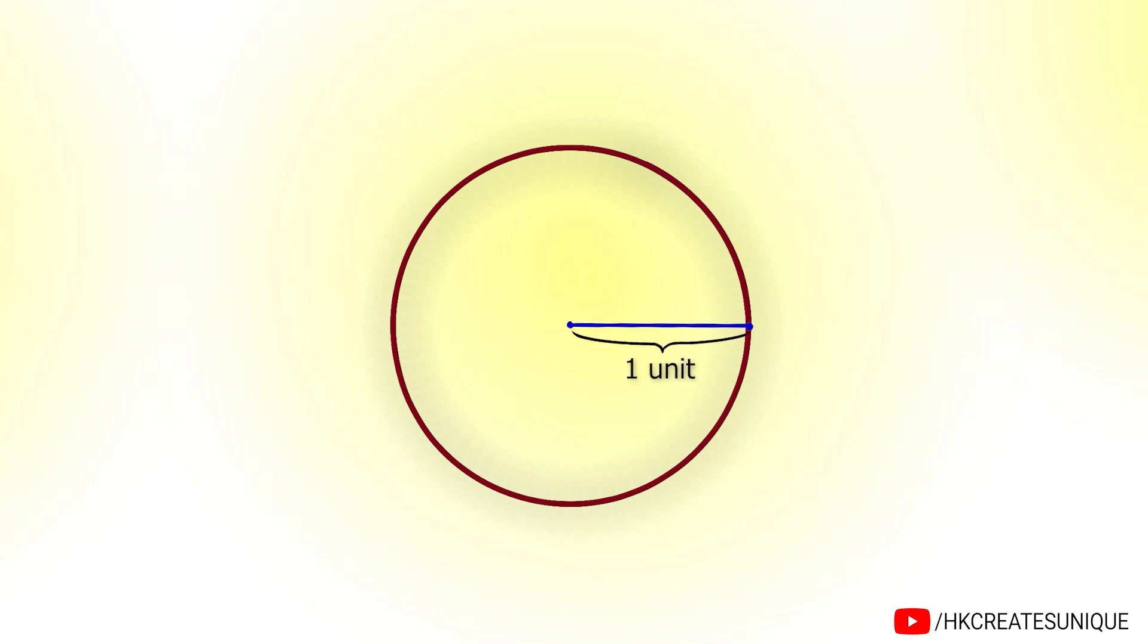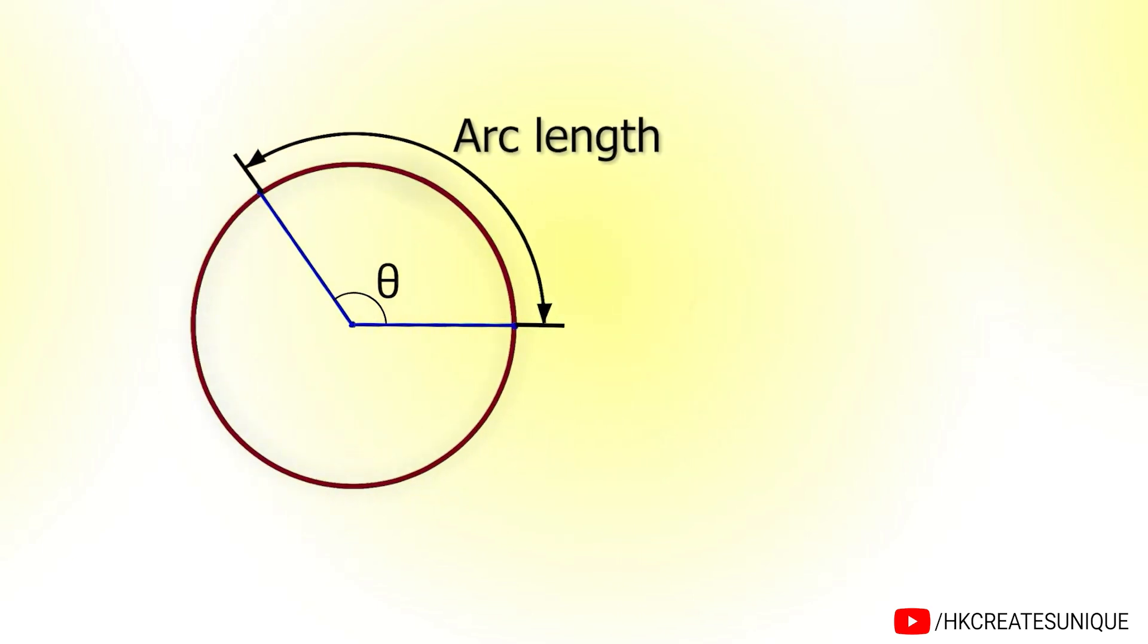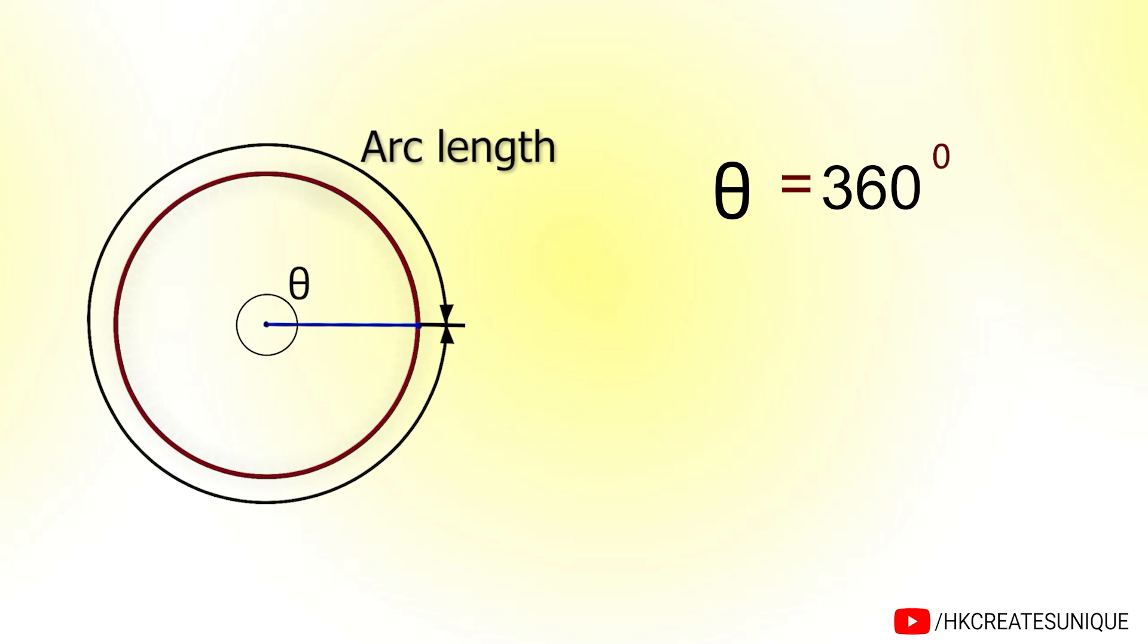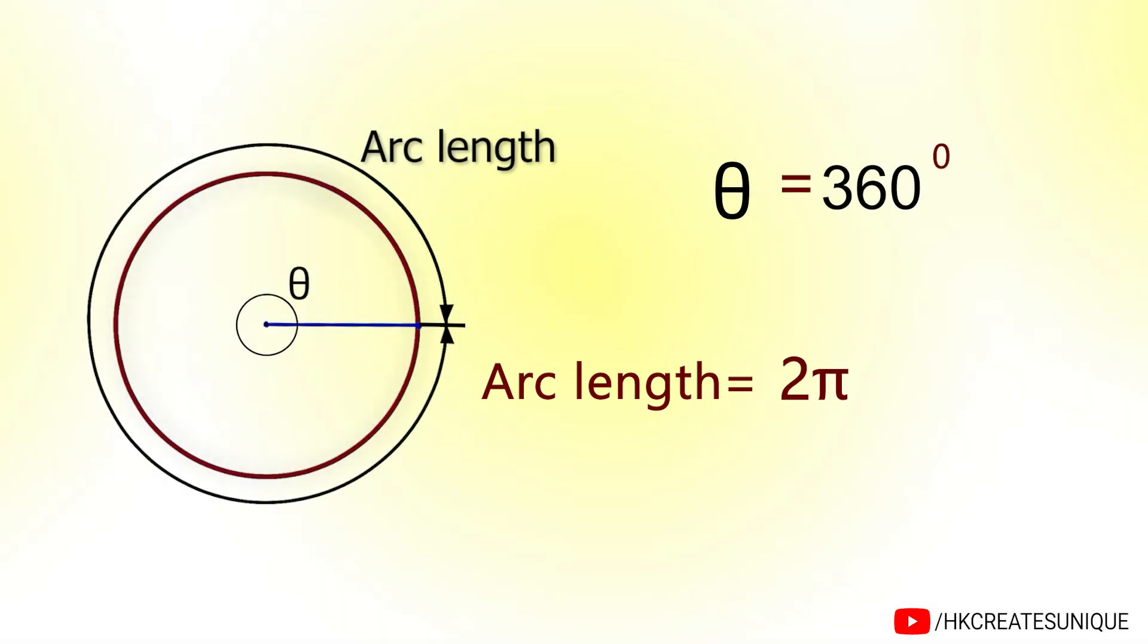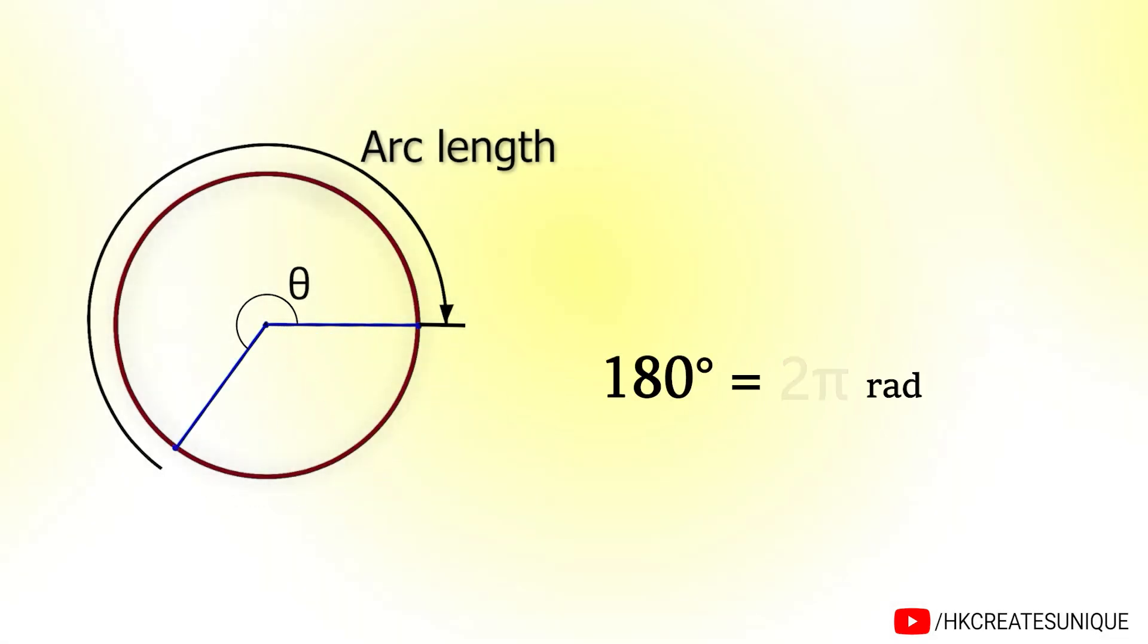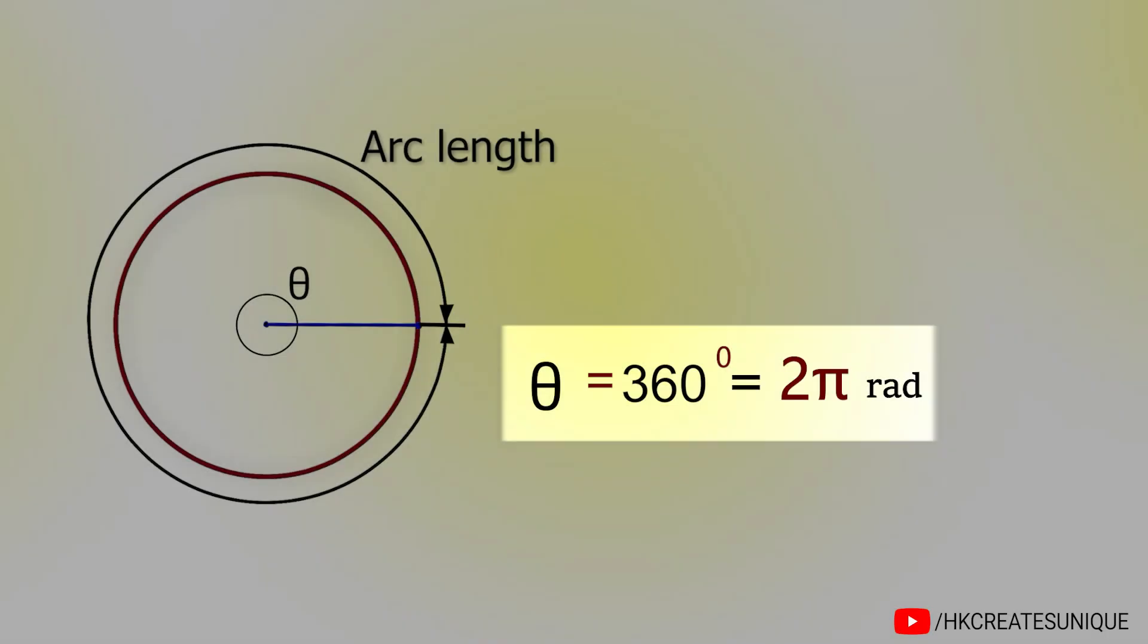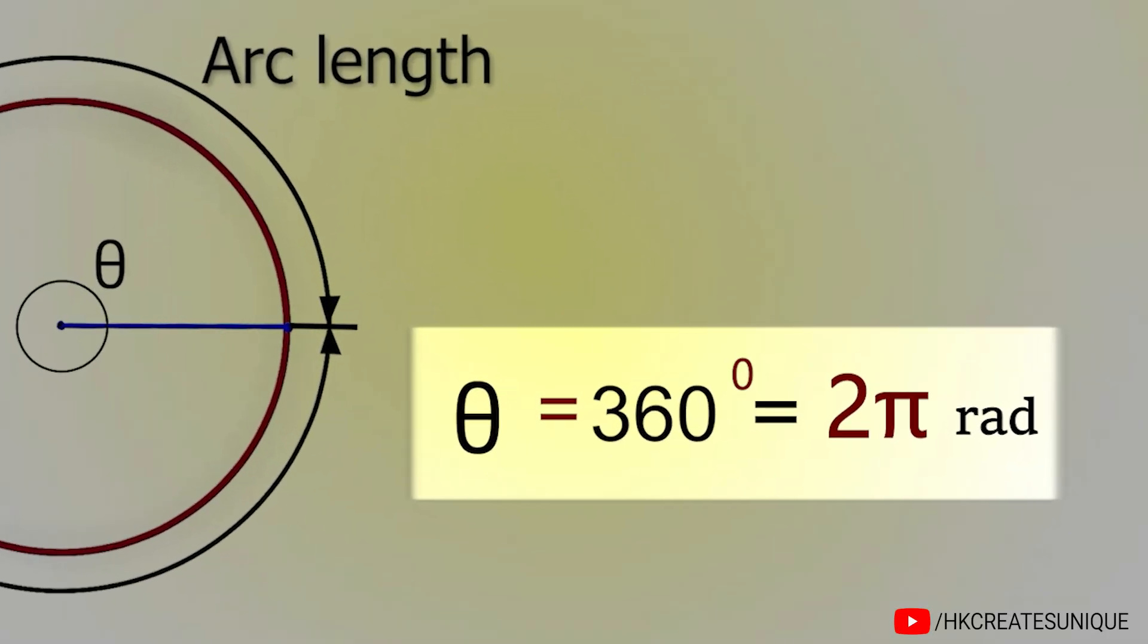Consider a circle of radius 1 unit. For any angle theta, the arc length of the circle is the angle in radian. So for 360 degrees, the total arc length is the circumference of the circle, which is equal to 2 pi r. And as r equals 1 unit, it will be 2 pi. So 360 degrees means 2 pi radians. 180 degrees will be pi radians. And 90 degrees will be pi by 2 radians. Just remember that 360 degrees equals 2 pi radians. And then you will be able to convert to radians from degrees or to degrees from radians.